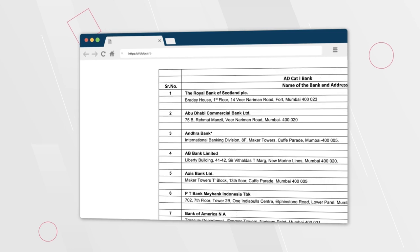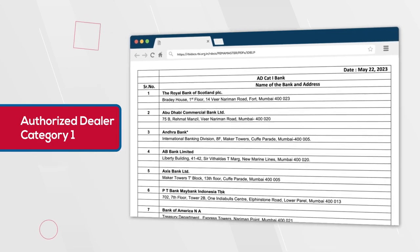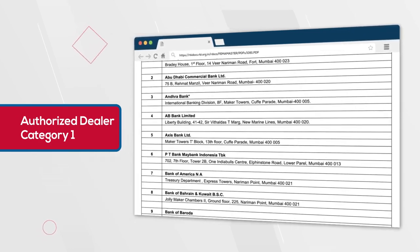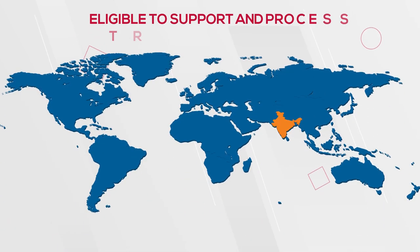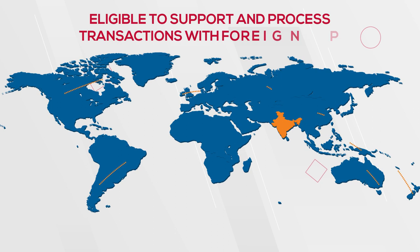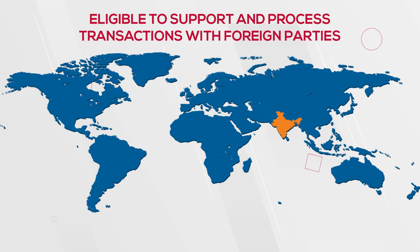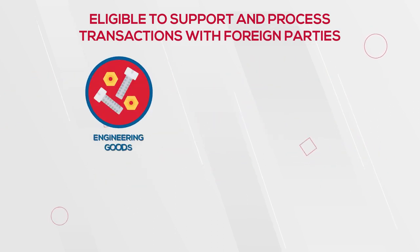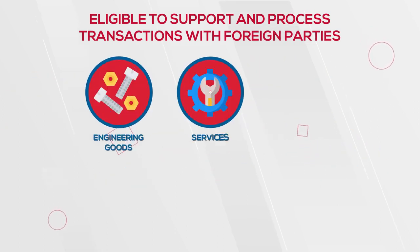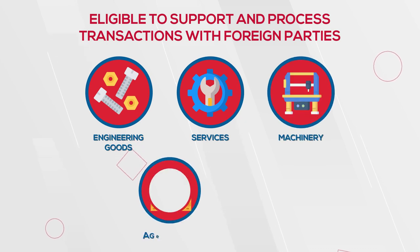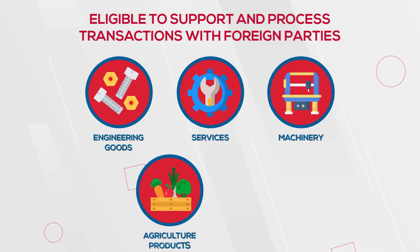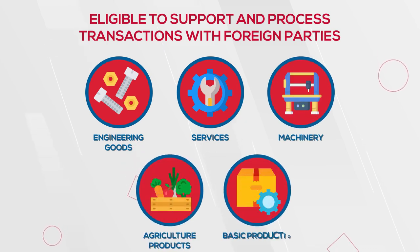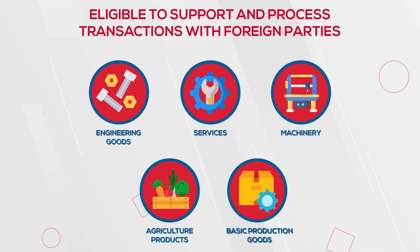It can be any bank listed under the Authorised Dealer category 1, which is eligible to support and process transactions with foreign parties in terms of export of engineering goods, services, machinery, agricultural products and basic production goods.